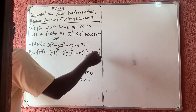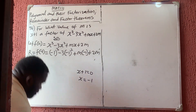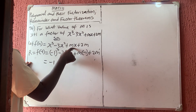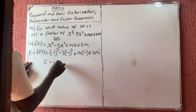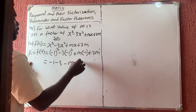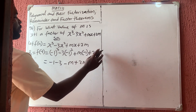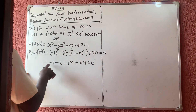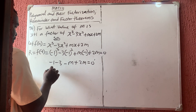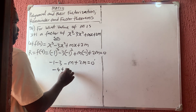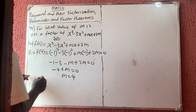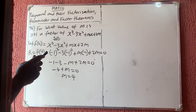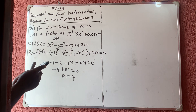For odd powers, the negative remains; for even powers, the negative disappears. So we get minus 1 minus 3 minus m plus 2m equals zero. That gives minus 4 plus m equals zero, therefore m equals 4. The next question is question number 85.